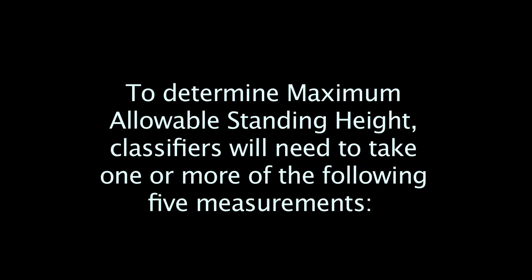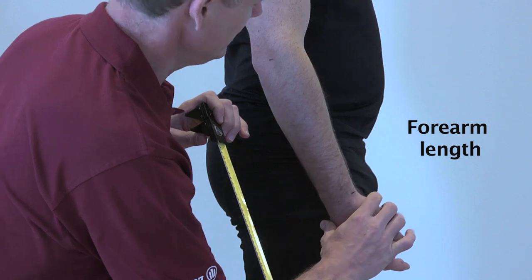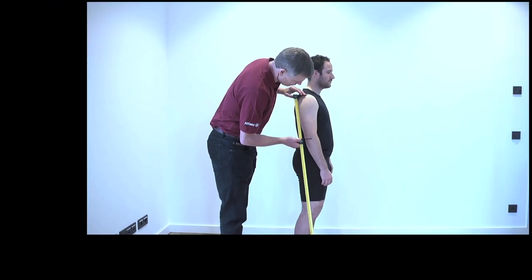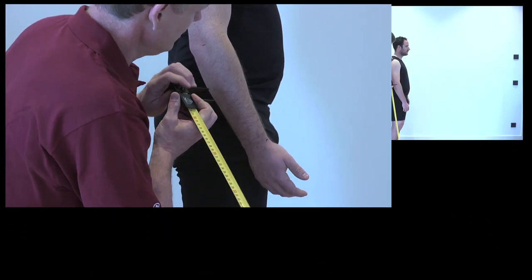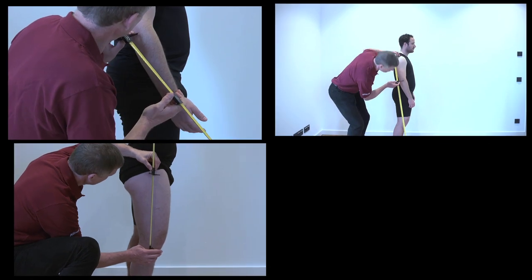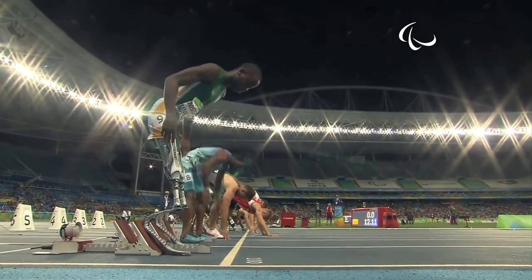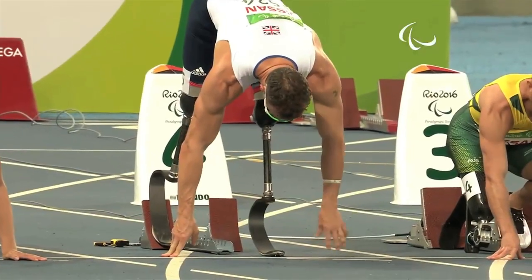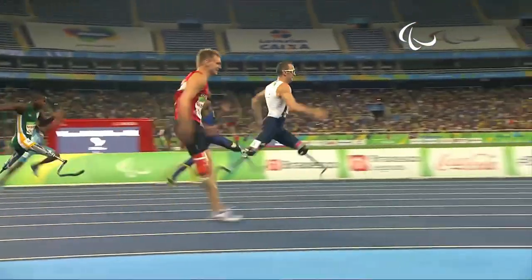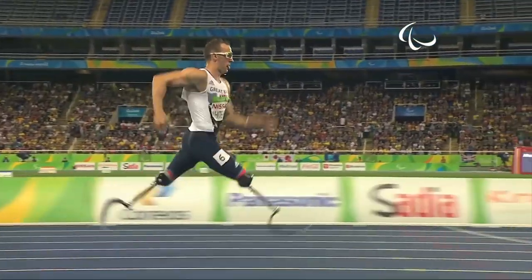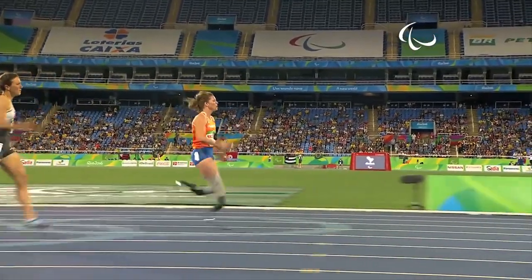To determine maximum allowable standing height, classifiers will need to take one or more of the following five measurements: upper arm length, forearm length, thigh length, sitting height, and arm span. The first three measurements can be referred to collectively as body segment lengths. Exactly which measurements are required will depend on whether the athlete is male or female and whether they are a bilateral transfemoral amputee or a transtibial amputee or other.